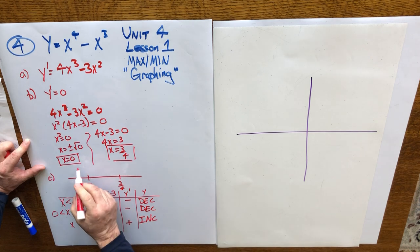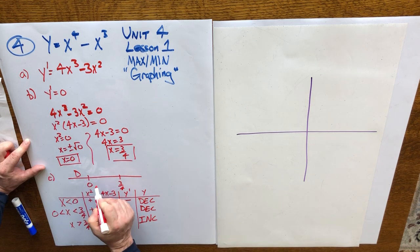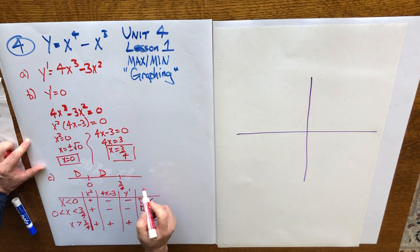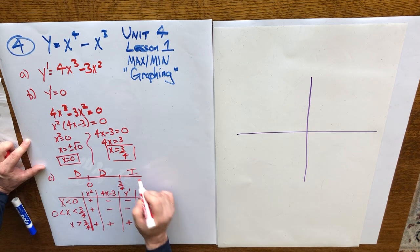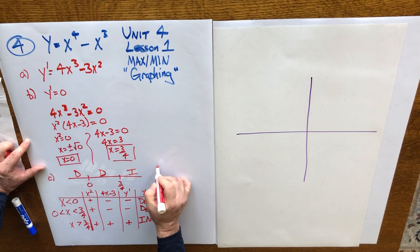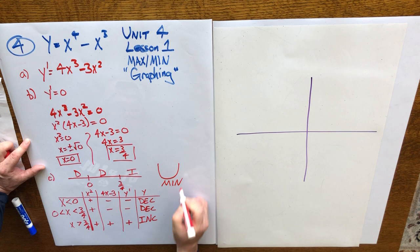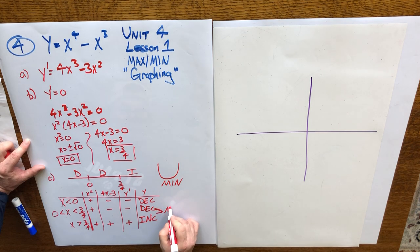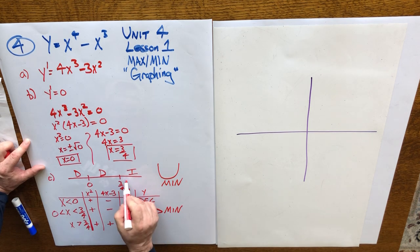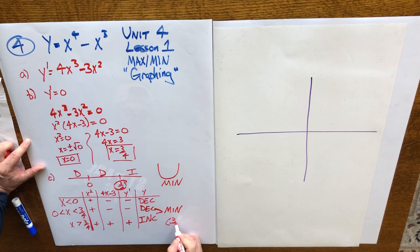So we have a function that was decreasing to the left of 0. It continued to decrease once it passed 0. But as it passed 3 quarters, it changes to an increasing function. So if you go from decreasing to increasing, you're creating a minimum. So we say this is a minimum value right here, and 3 quarters is the x value.